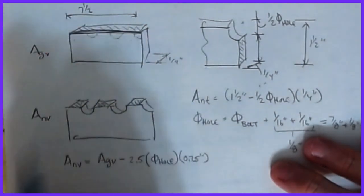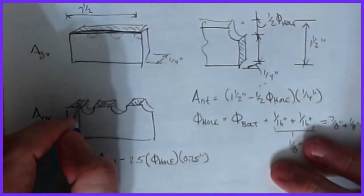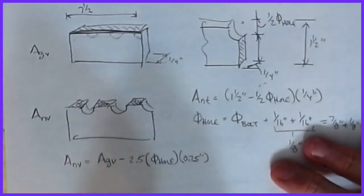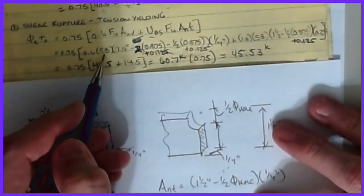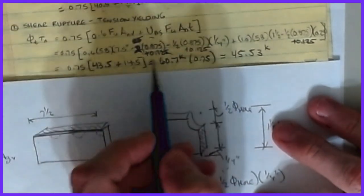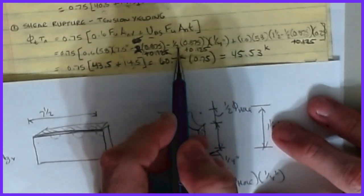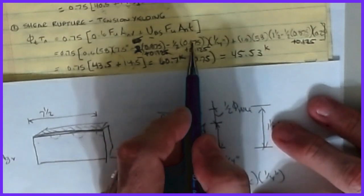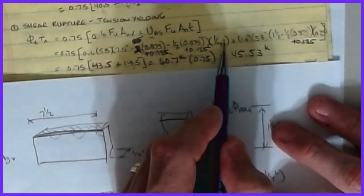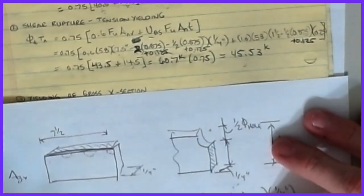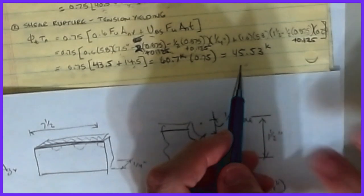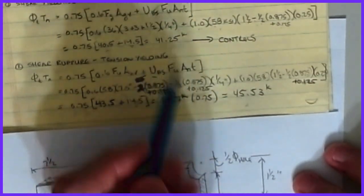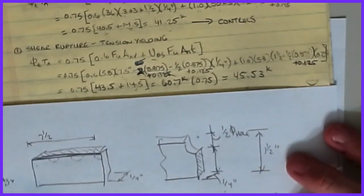Adding the shear fracture term to the same Ant term and multiplying by φ = 0.75, the SFTY result is φRn = 45.53 kips. The two values are fairly close together, which is typical. The controlling block shear capacity is the smaller: 41.25 kips from the SYTF case.